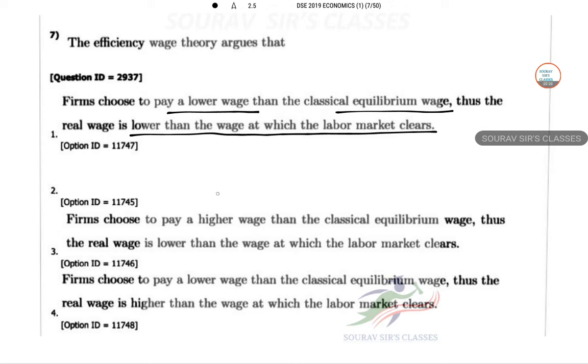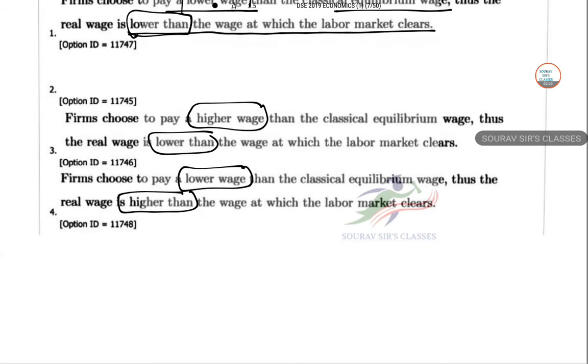So the main part is whether firms choose to pay lower wage than the classical equilibrium wage, thus the real wage is lower than. So these are the things, here also higher wage, lower than, lower wage, higher than.